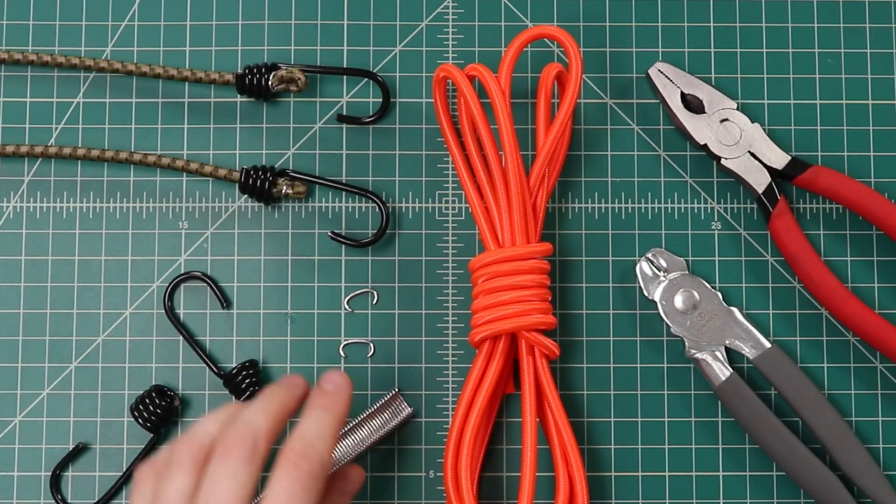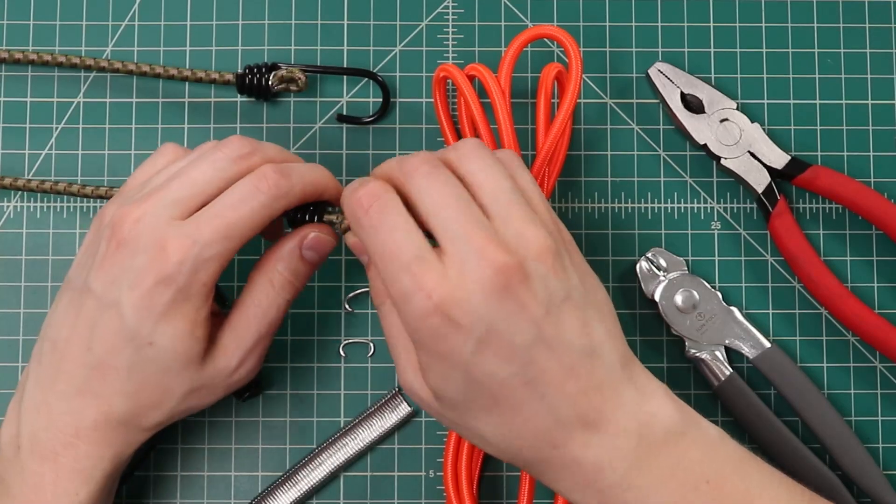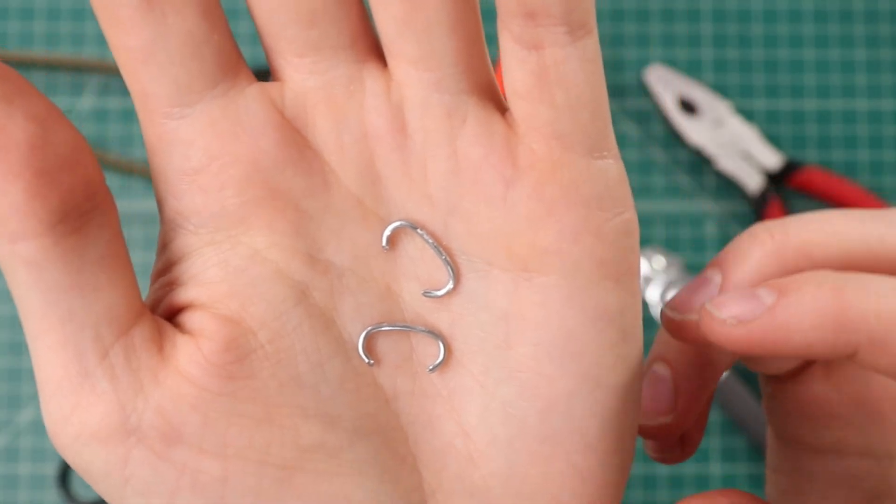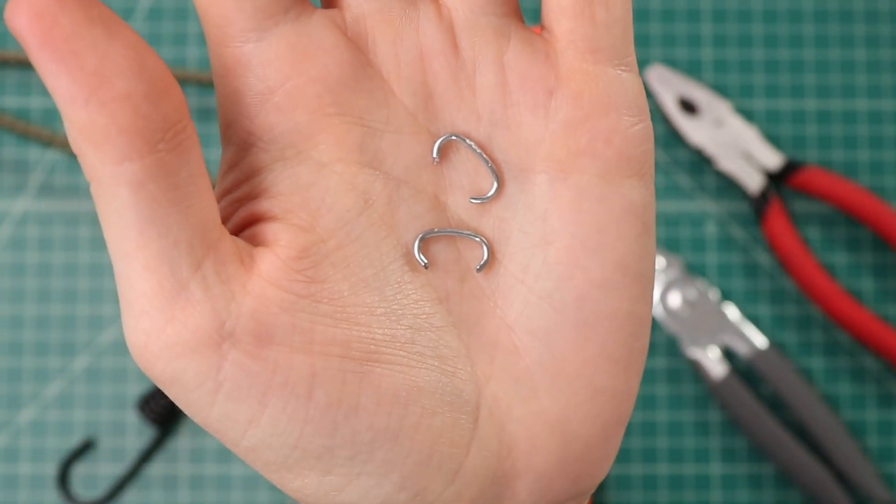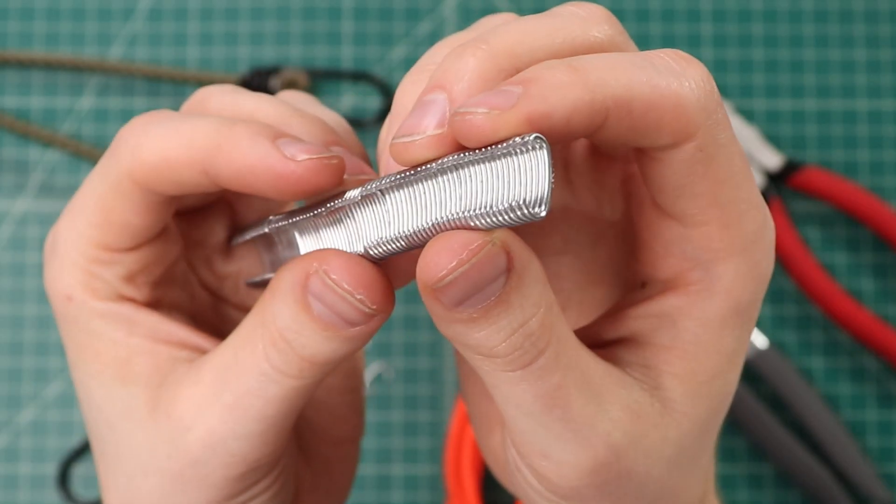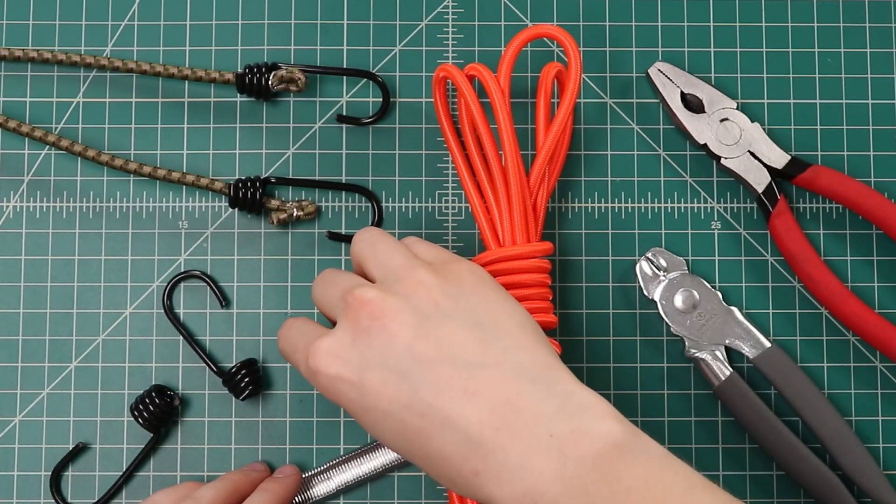If you don't have hog rings, you can tie knots in the end, but you're not going to get as good of a result since knots don't hold very well in bungee cord. Hog rings are essentially a rounded staple that we're going to clamp around the bungee cord to keep it from pulling through the hooks. They often come in a strip like this, and they have a lot of different industrial applications.